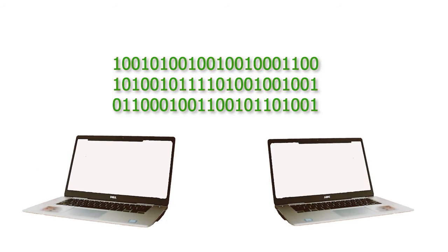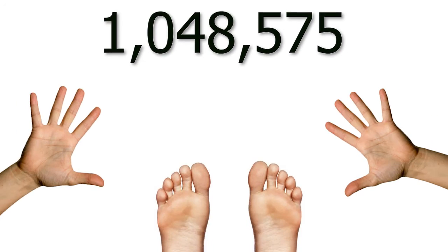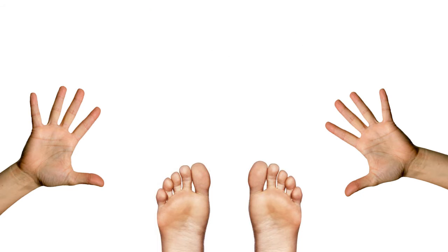And although we associate binary with electronics and how they operate, binary can be used anywhere, such as sending a message miles away with a bright light using Morse code, or even counting up to 1,048,575 using all 20 of your fingers and toes.